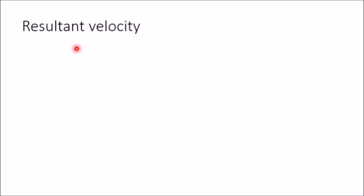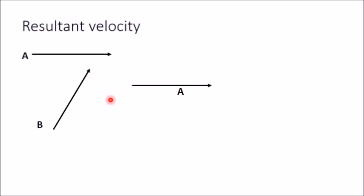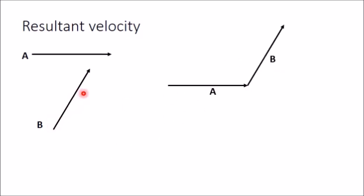Sometimes we need to determine a resultant velocity or resultant vector. To find the resultant of two vectors, draw the first vector, then from the end point of that vector draw the second vector B. Join the start point of the first vector to the end point of the second vector — that is the resultant vector, which is A plus B.